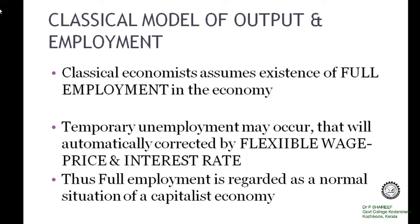If unemployment existed, the unemployed workers are willing to work at lower wage rates. As a result, the cost of production decreases. When the cost of production decreases, the price of the commodity also decreases. The decrease in the price of commodity leads to an increase in demand for commodities. And when demand for commodity increases, the production increases. Thus, the unemployment problem will be solved due to the self-adjusting mechanism existed in the free market economy.